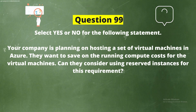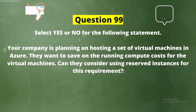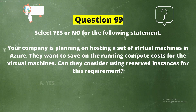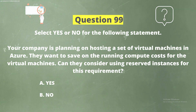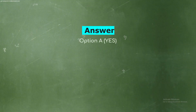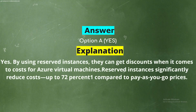Question 99. Select yes or no for the following statement. Your company is planning on hosting a set of virtual machines in Azure and wants to save on running compute costs. Can they consider using reserved instances for this requirement? The correct answer is Option A: Yes. By using reserved instances, they can get discounts on the cost of Azure virtual machines — reserved instances significantly reduce costs, up to 72% when compared to pay-as-you-go prices.